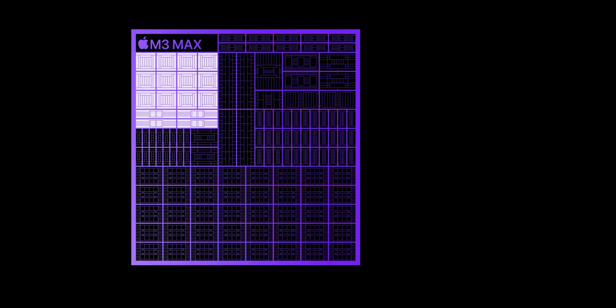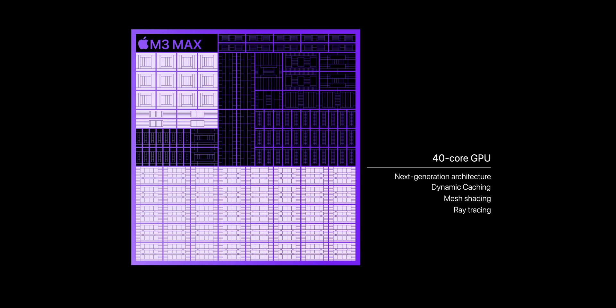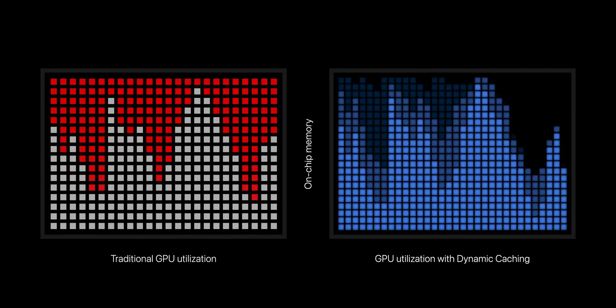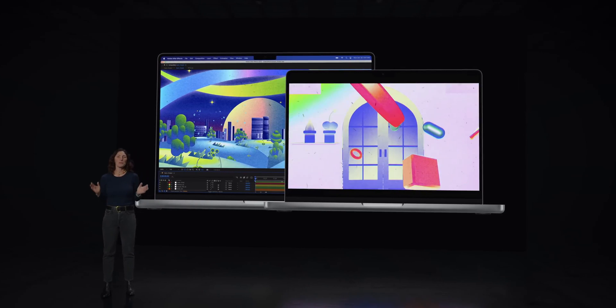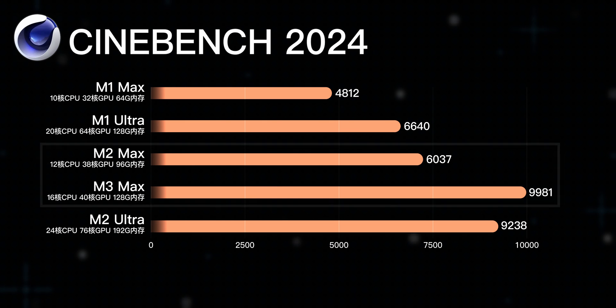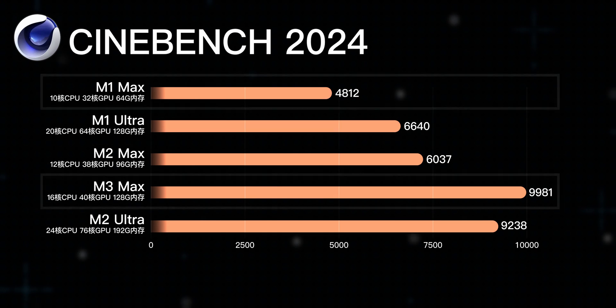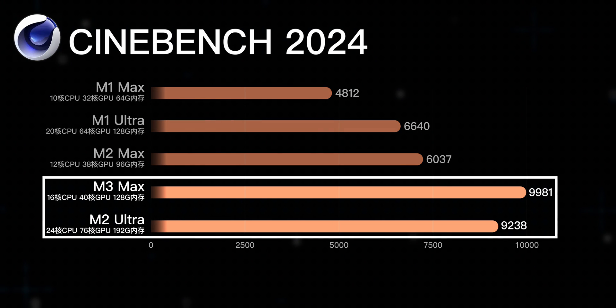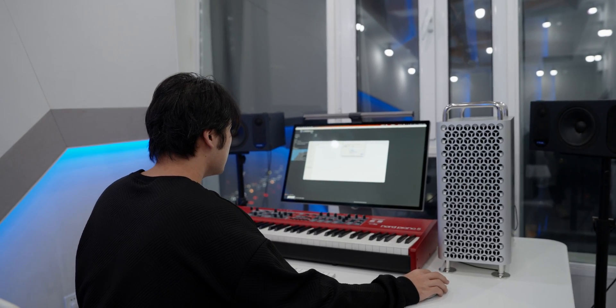For the Cinebench 2024 GPU test, the M3 series features a new generation GPU with a new architecture, introducing dynamic caching, improved GPU utilization, and enhanced performance in professional apps and games. The improvement of M3 Max is very significant — up 65% over M2 Max, and twice the score of M1 Max — directly surpassing the GPU score of M2 Ultra. As a result, owning both a Mac Pro and Mac Studio with top M2 Ultra cores at the same time feels painful.